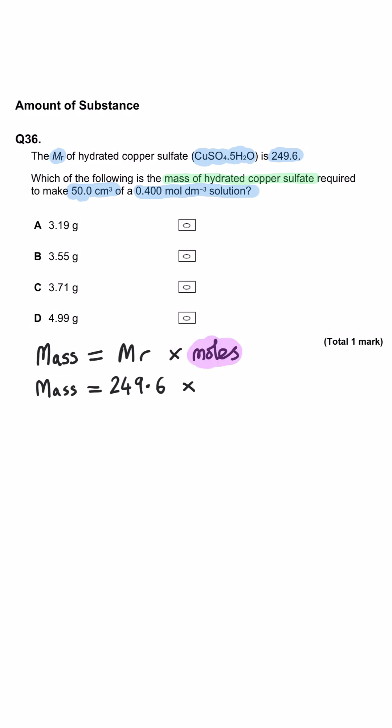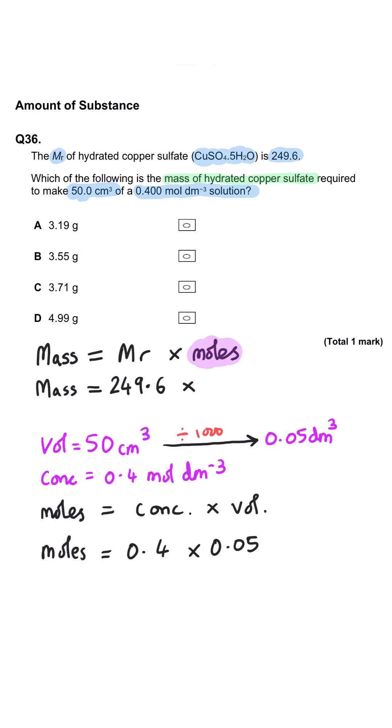We know that the volume is 50 cm cubed, and we know what the concentration is. So the first job is to turn that 50 cm cubed into dm cubed by dividing by 1000, so 0.05. And moles of solution is concentration times by volume, so 0.4 times by 0.05, which gets us 0.02 moles of the hydrated copper sulfate.